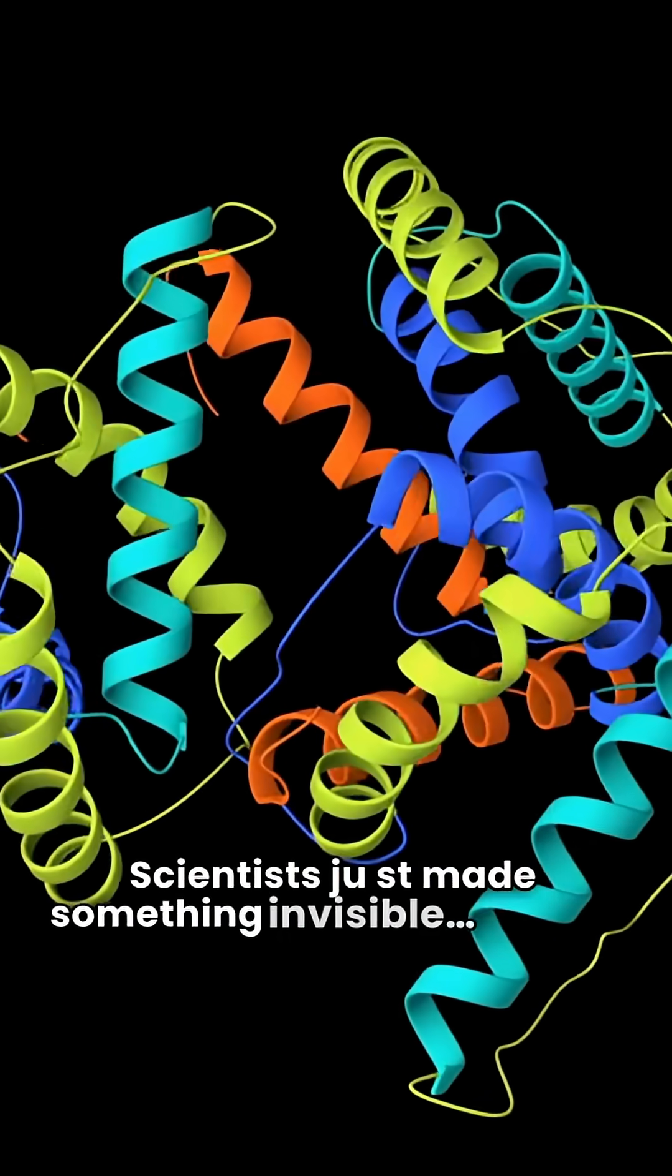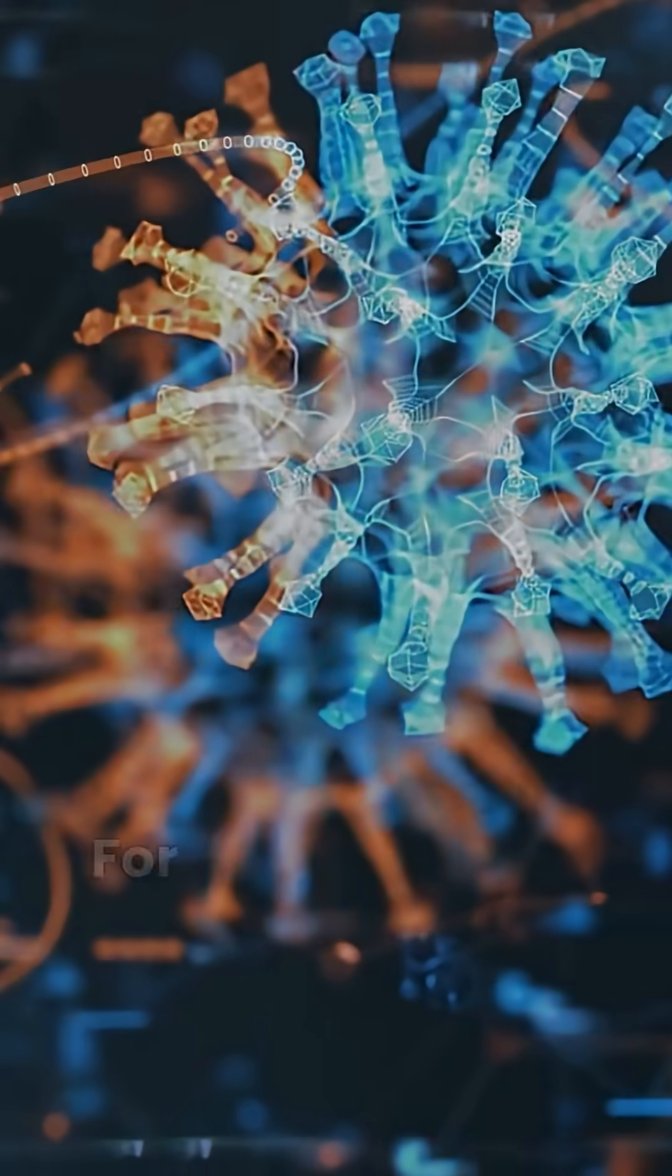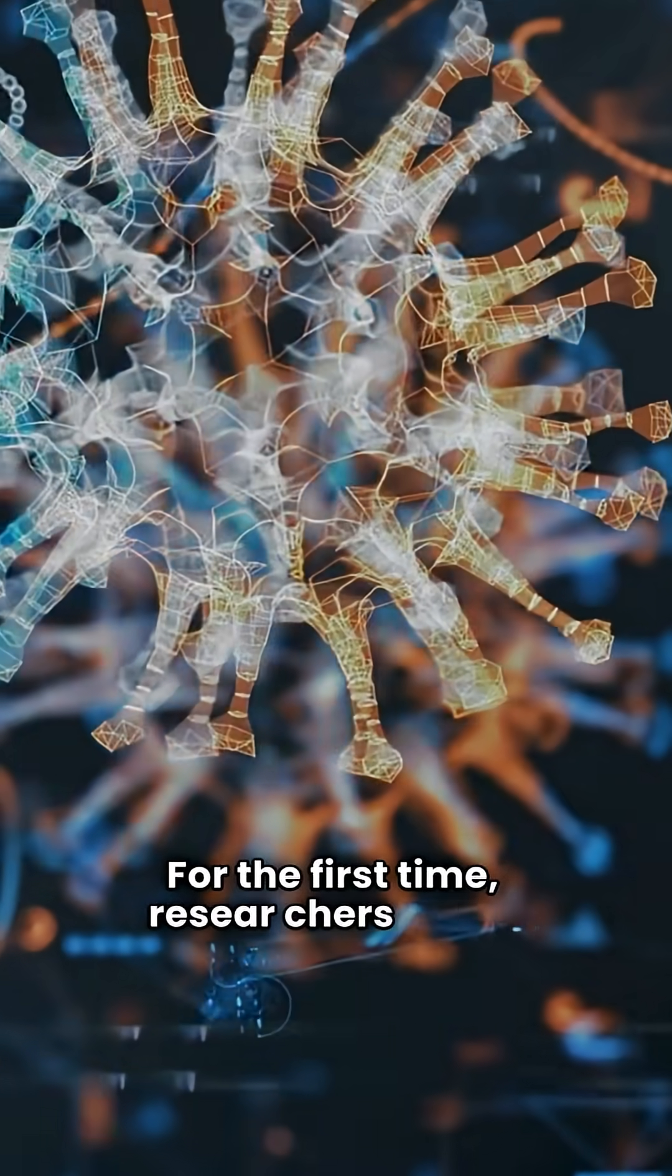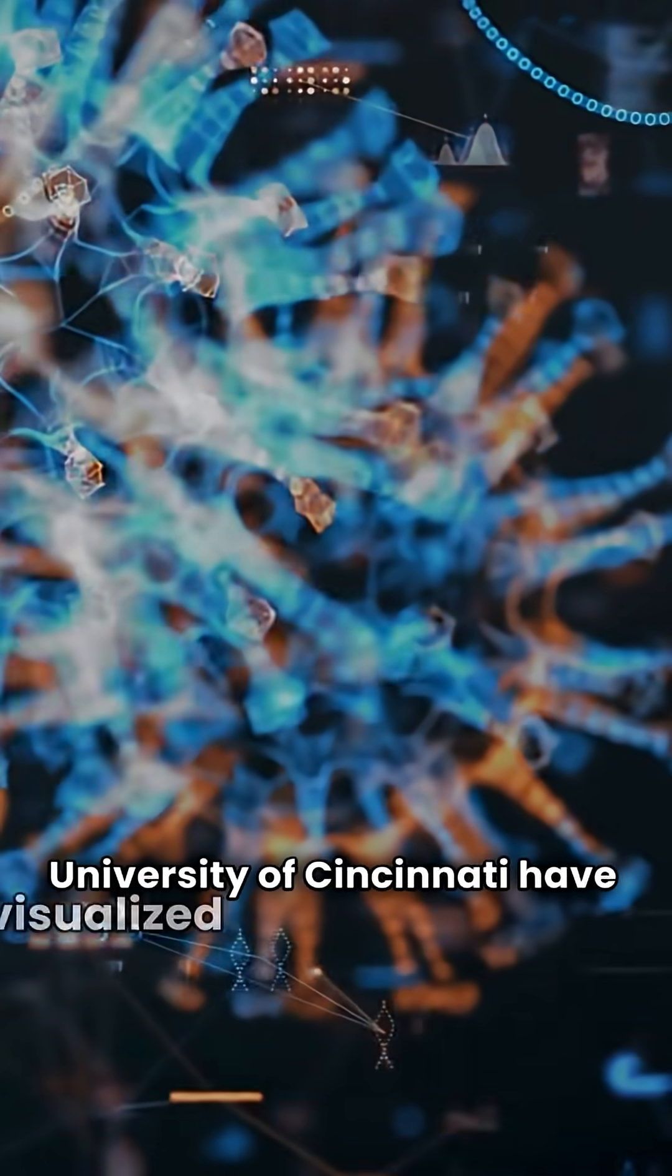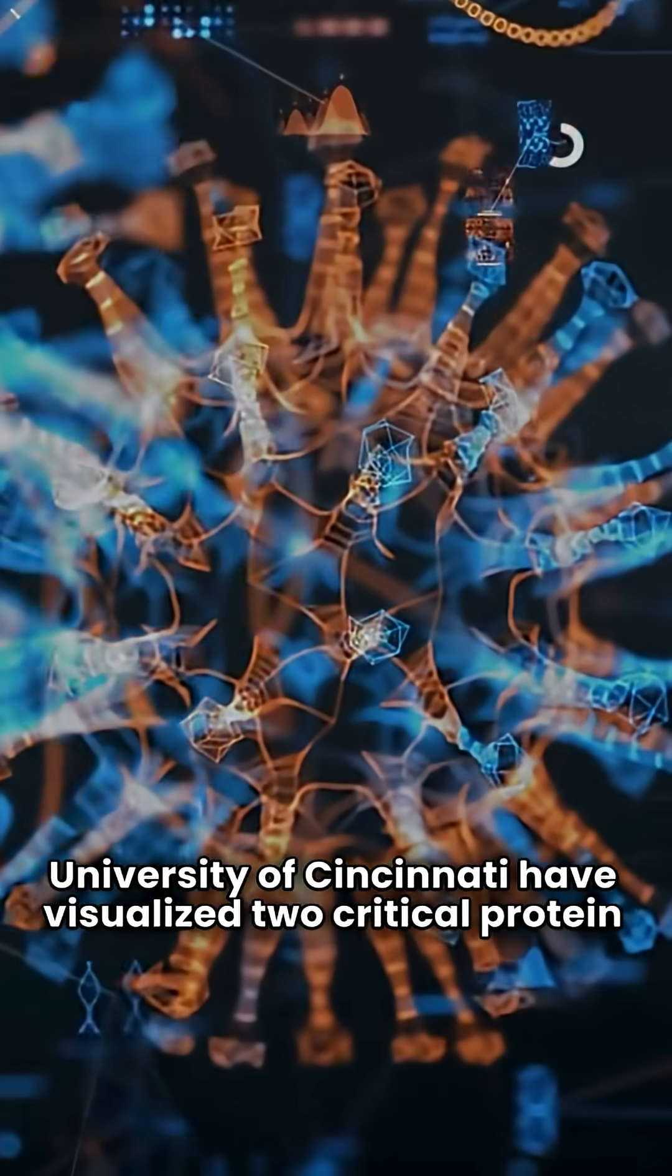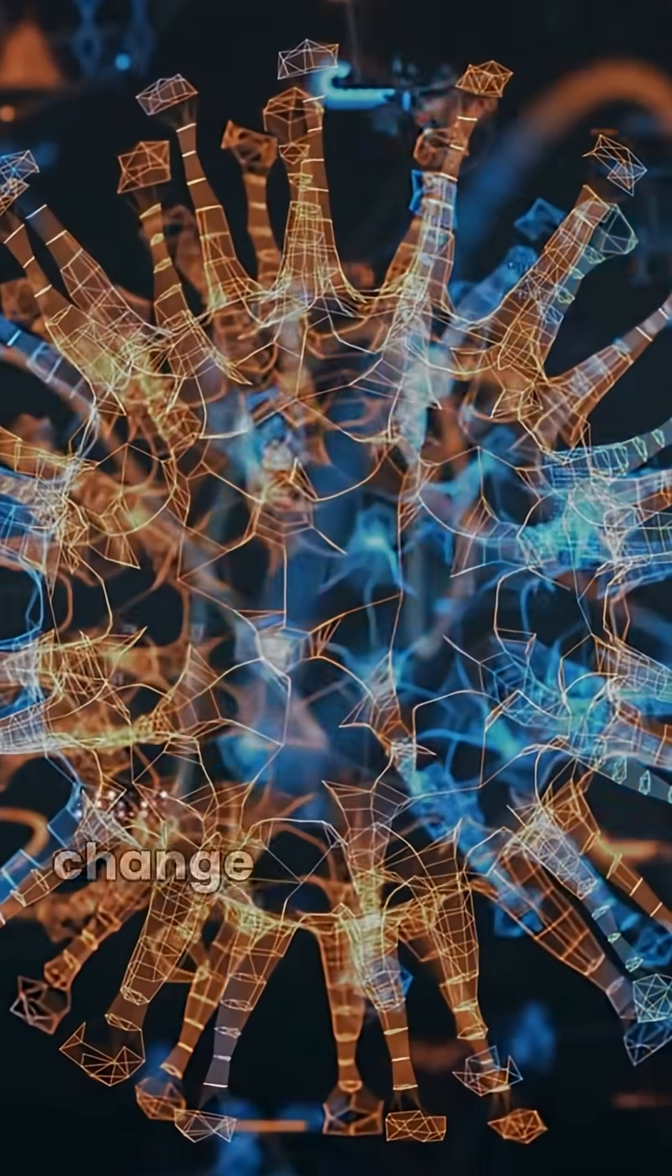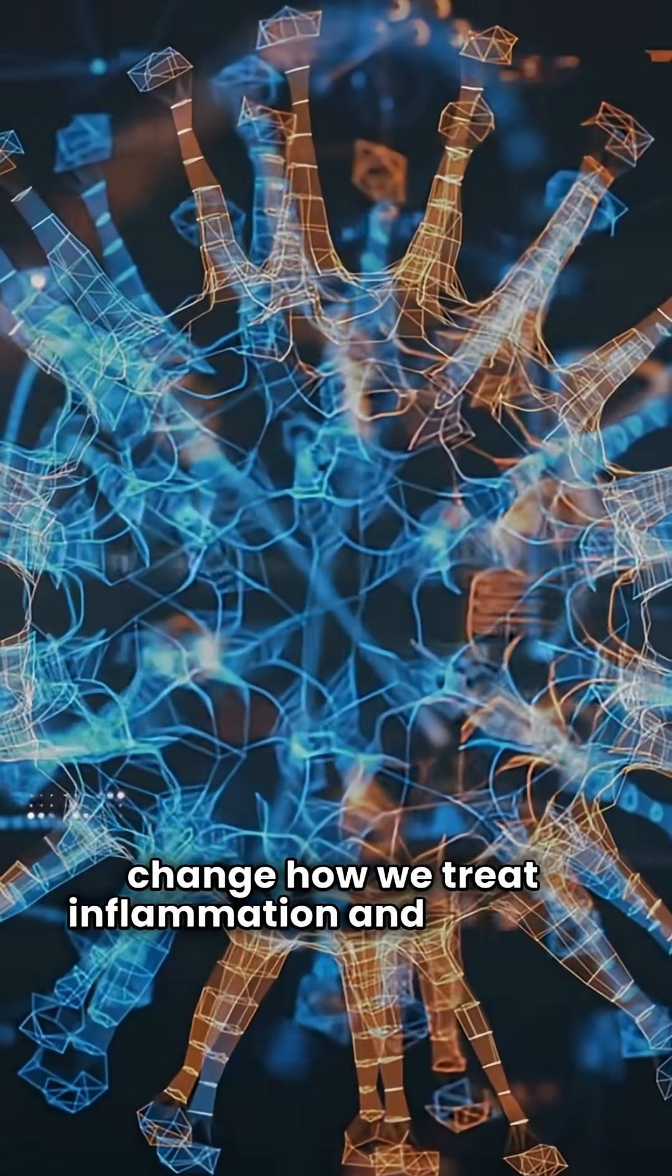Scientists just made something invisible visible. For the first time, researchers at the University of Cincinnati have visualized two critical protein structures inside the human body, and it could change how we treat inflammation and disease.